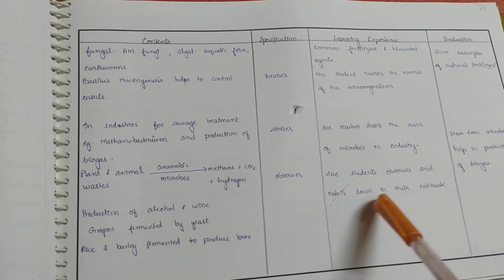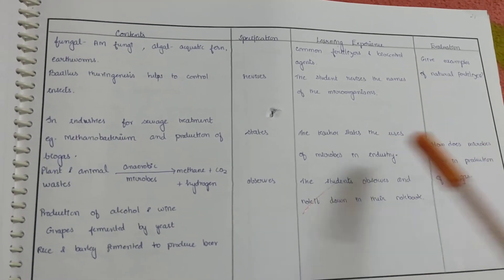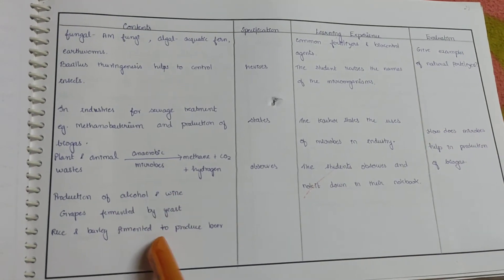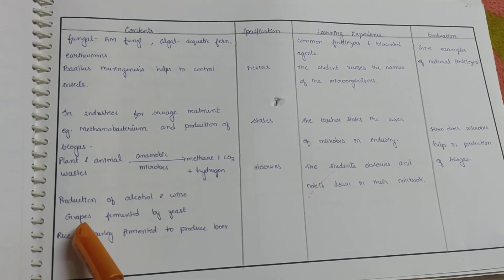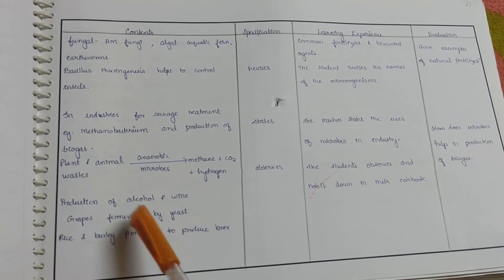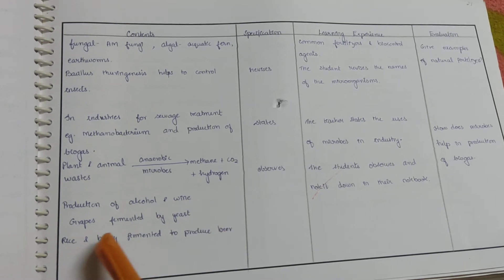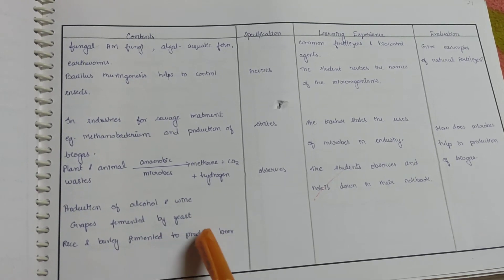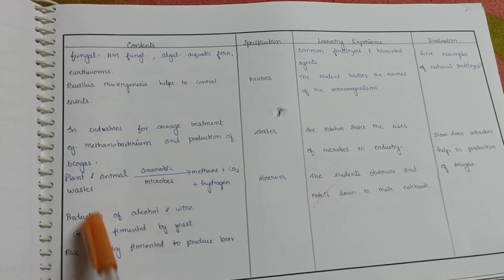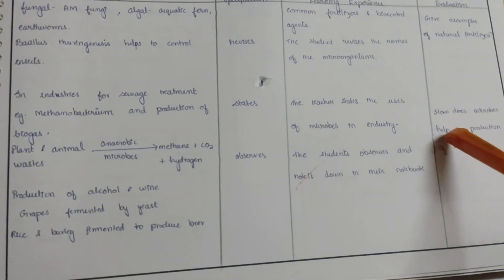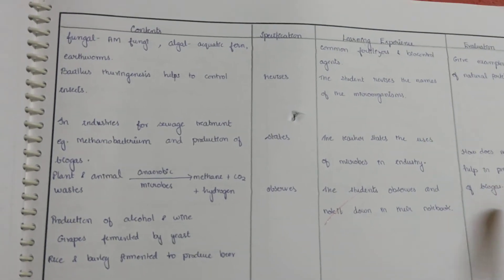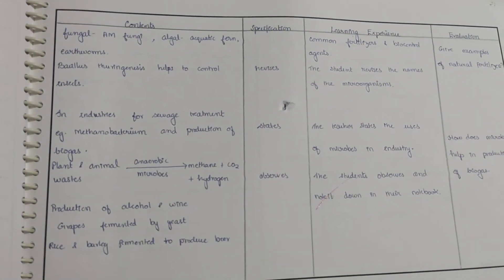We also give the explanation of production of alcohol and wine because grapes is getting fermented by yeast. Rice and barley fermented to produce beer. We are giving more examples on industrial microbes and evaluate it as how does microbes help in production of biogas.